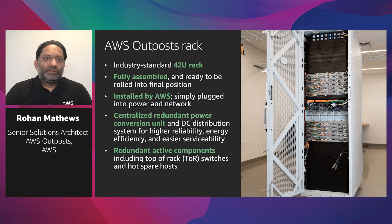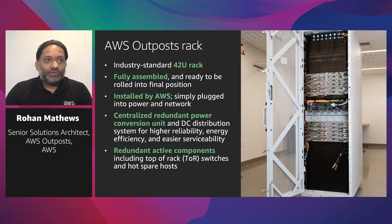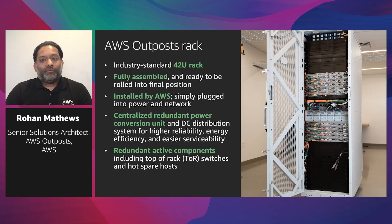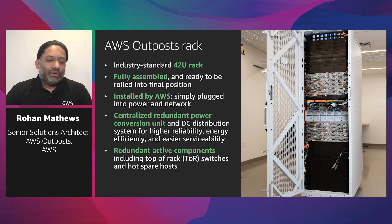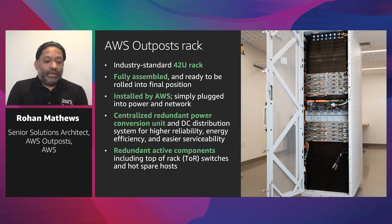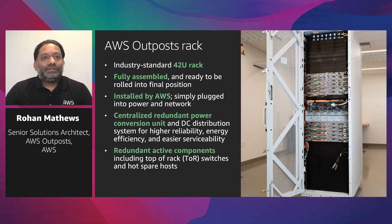An AWS Outpost rack is the physical element upon which the Outpost service is built. The rack is an industry-standard 42U, fully assembled from our manufacturing facility. An AWS team performs the installation at your site — essentially plugging in power, plugging in network cables, and setting up the logical connection back to AWS to bring the Outpost online as capacity dedicated to you. These racks have a centralized power distribution unit for high availability and redundant active components such as top-of-rack switches.